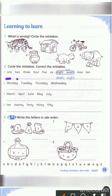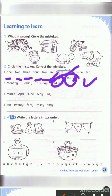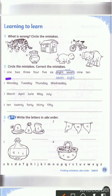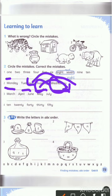For example, number one: one, two, three, four, five, six, eight, seven — no, it's a big mistake, it's wrong. هذا خطأ. فلازم نبدأ بـ seven وبعدين eight. هذا هو الخطأ — اكتشفنا الخطأ وضعنا عليه circle وكتبنا الصح تحته. Number two: Monday, Tuesday, Thursday, Wednesday — وين الخطأ؟ لازم نبدأ بـ Wednesday بالأول وبعدين Thursday.